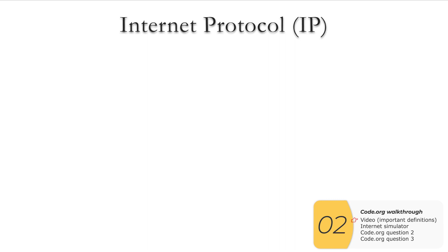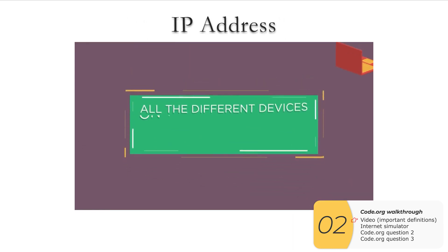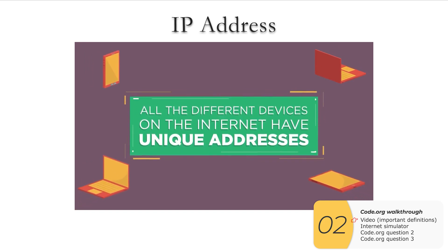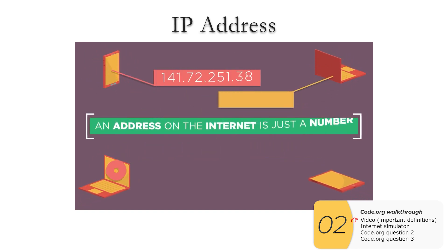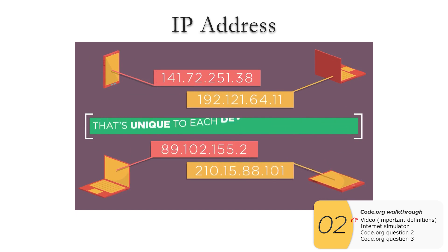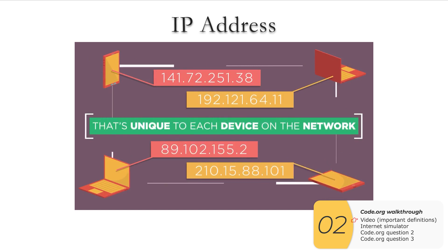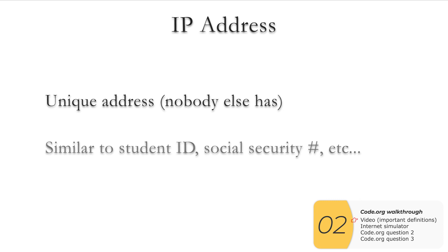Next, let's look at what an IP address is. All the different devices on the internet have unique addresses. An address on the internet is just a number — similar to a phone number or a street address — that's unique to each computer or device at the edge of the network. The concept is similar to student IDs or social security numbers.